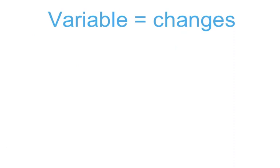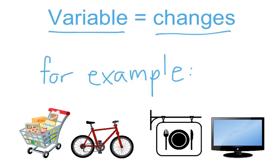On the other hand, variable expenses change every month. They never stay the same. For example, groceries, buying a new bike, going out to a restaurant, buying a new TV. These are all variable expenses because they vary or change every month. They never stay the same.